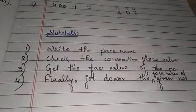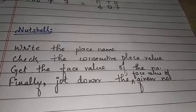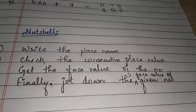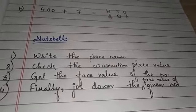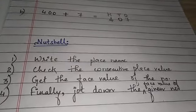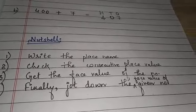Face value of the number will be like 400, face value is 4. Number 4: finally, jot down the face value of the given number. And if you get the face value of the number, you can easily write down as per their place value.